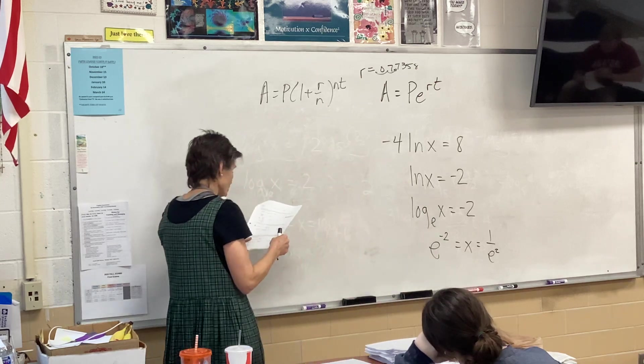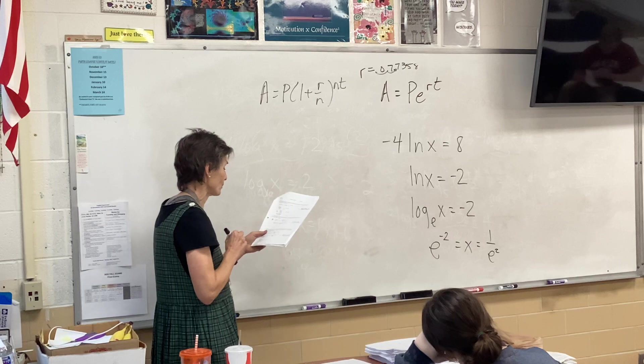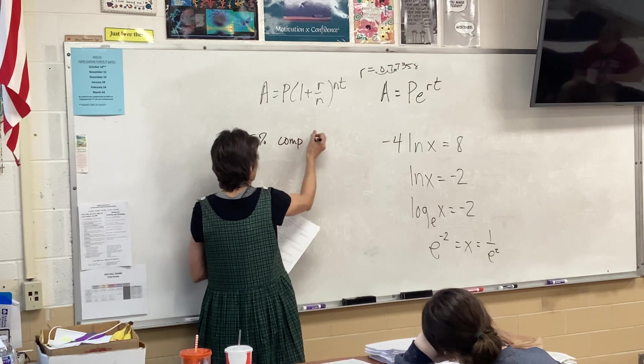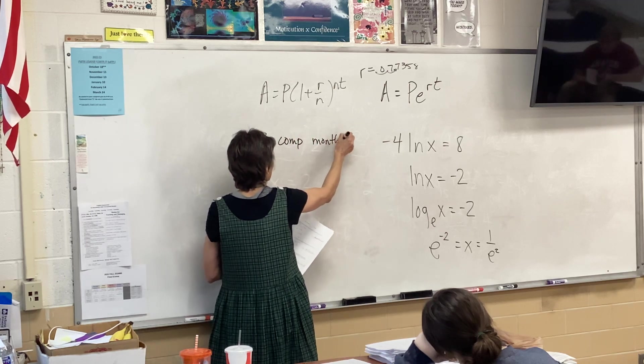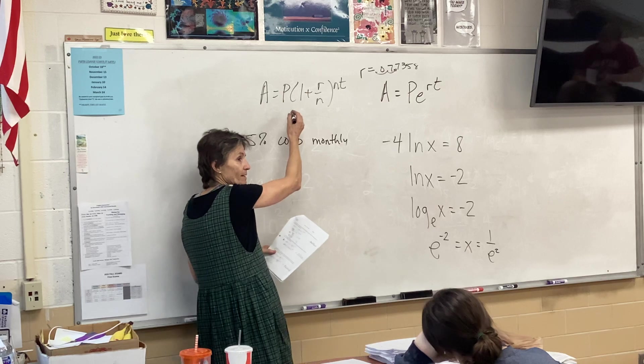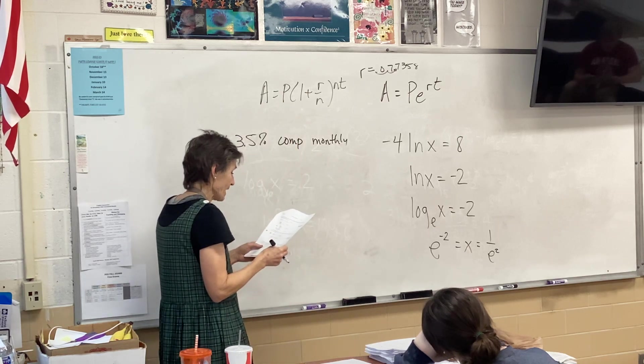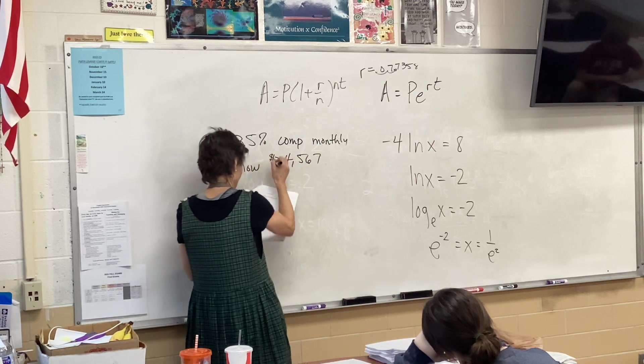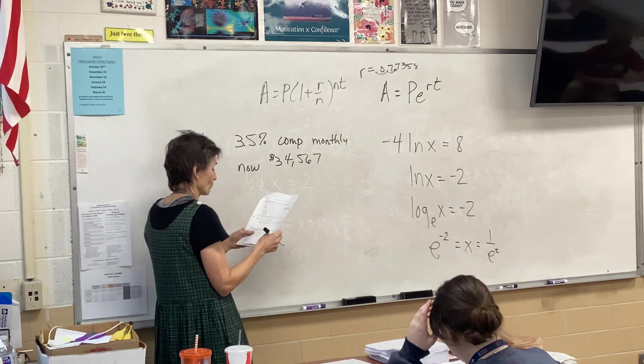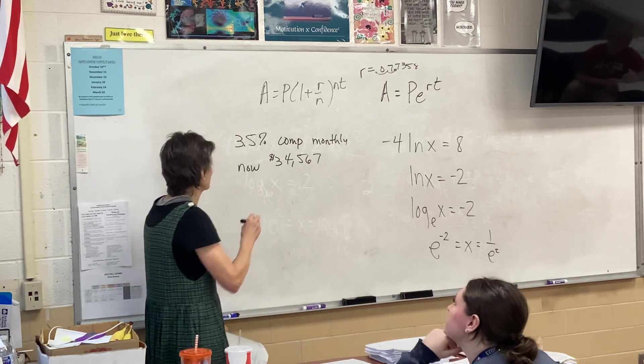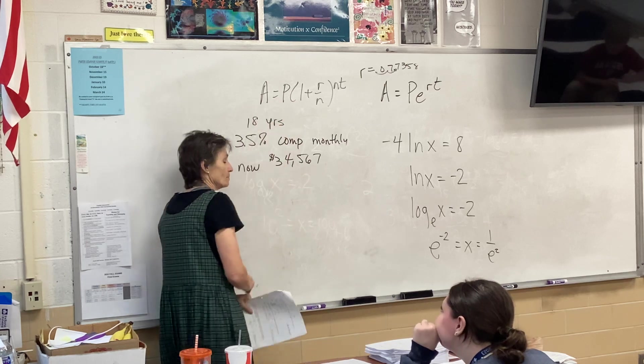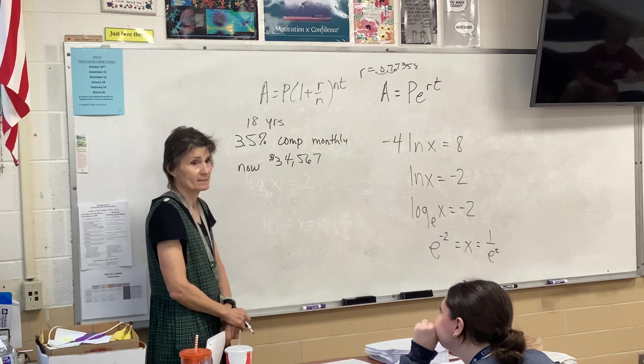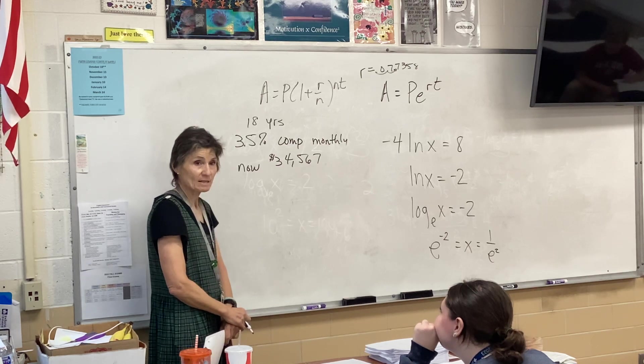When you were born 18 years ago, your parents put some money into an account paying 3.5% interest compounded monthly. Now, as soon as it says compounded monthly, I know that's my formula, right? Okay. The account is now worth $34,567. How much money did your parents originally deposit? It was 18 years ago. So what am I looking for? How much money did your parents originally deposit? What am I looking for? B. Right?